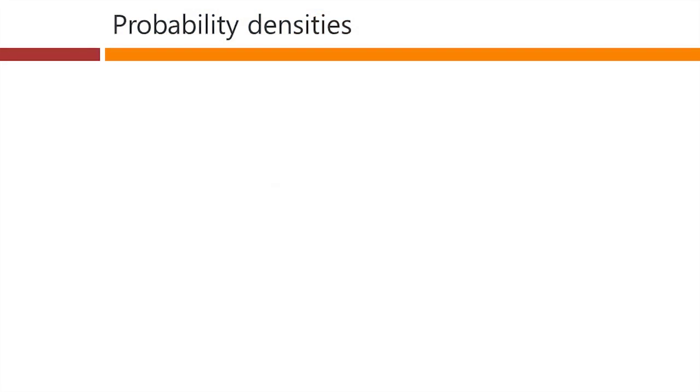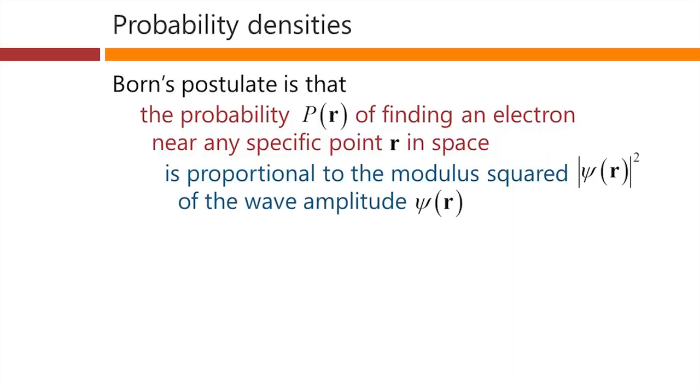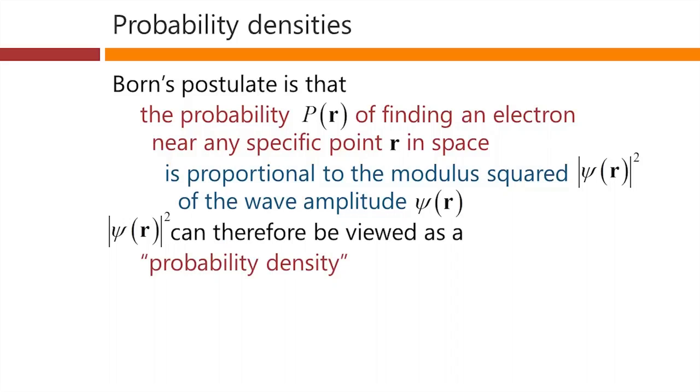Specifically, then, Born's postulate is that the probability, p of r, of finding an electron near any specific point r in space is proportional to the modulus squared of the wave amplitude. This modulus squared of the wave amplitude can, therefore, be viewed as a probability density. Now, that in itself is a reasonable concept in ordinary probability theory, and we're just choosing to propose that we interpret the wave function that way here.